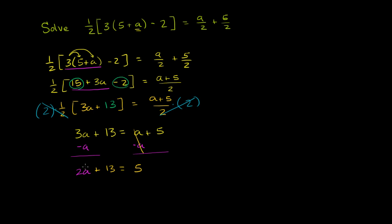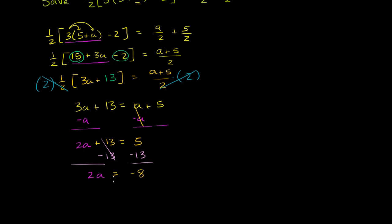Now I really want to have this 2a out here on the left by itself. So I want to get rid of this 13. So let's subtract 13 from both sides. These 13's cancel out. On the left hand side, you're left with just 2a. On the right hand side, 5 minus 13 is negative 8. And then to solve for a, I just have to divide both sides by 2. If I divide both sides by 2, then I get a is equal to negative 4. And we are done.